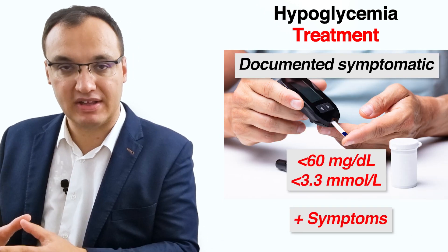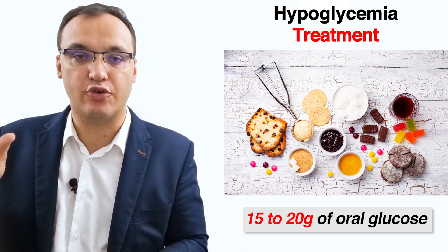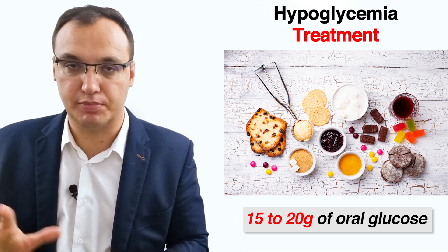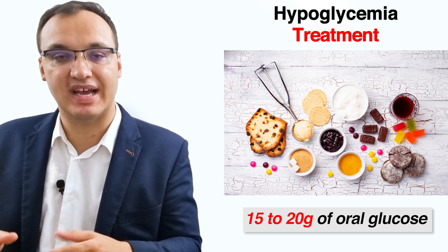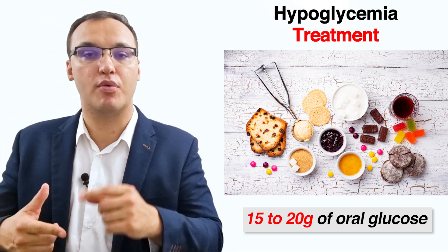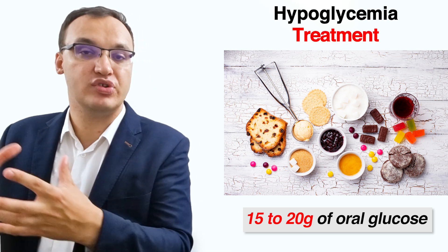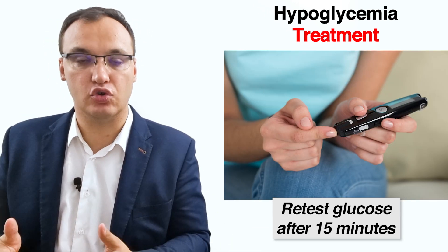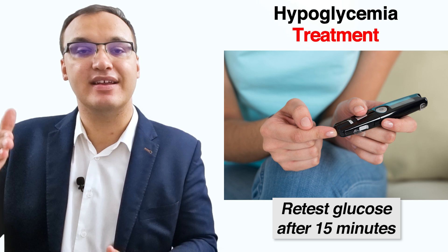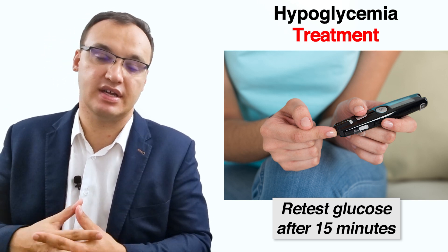Patients with symptomatic hypoglycemia should eat carbohydrates. 15 to 20 grams of oral glucose is typically sufficient, and glucose may be consumed as tablets, juice, milk, snacks, or with a meal. Patients should retest their glucose after 15 minutes and retreat if glucose levels have not improved.